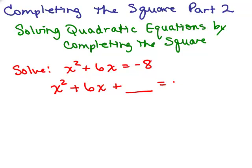Now this is an equation, so if we add something to the left side of the equal sign we must add it to the right side of the equal sign. So our first step is to write the x squared term and the x term on one side plus a blank, and then write the constant term on the other side plus some other blank. Now we want to complete the square.